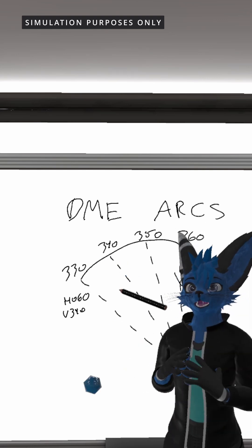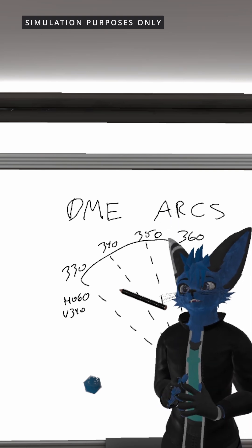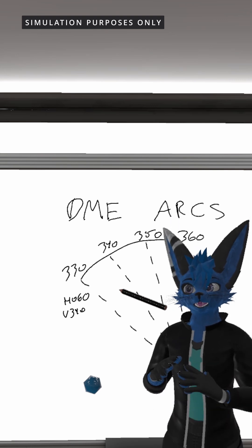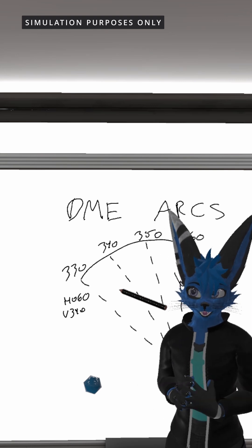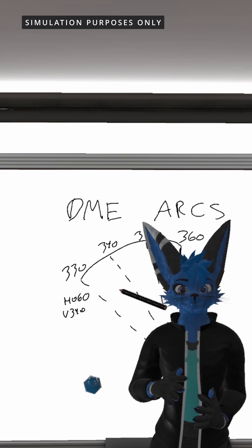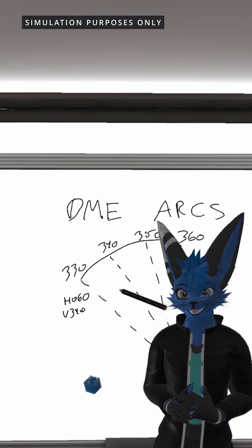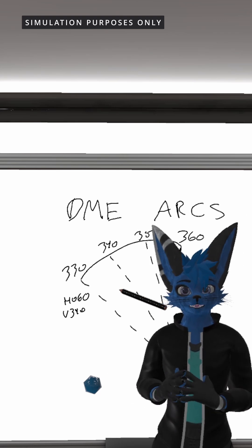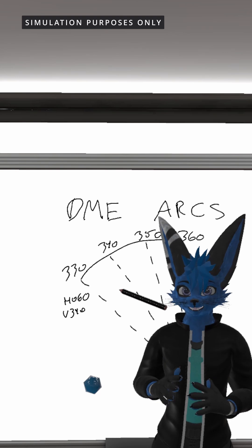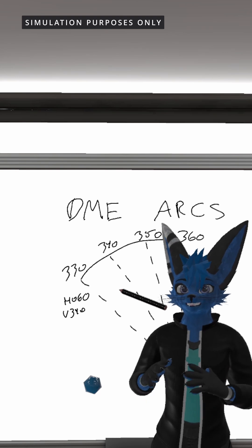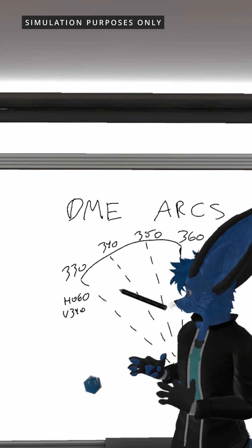Once we start flying to the 340 degree radial we are going to follow a guideline called turn 10 twist 10. We're going to turn 10 degrees to the right and then twist the OBS selector 10 degrees to the right. The reason we're turning it 10 degrees to the right is because we are making a right-handed arc.